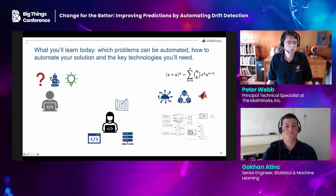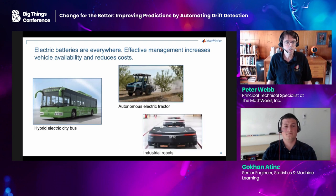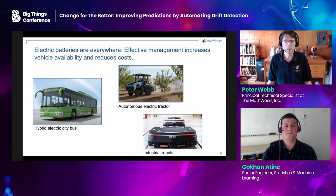Today, we're going to demonstrate how we built a predictive maintenance application for a fleet of electric vehicles. As the world moves toward carbon neutral technologies, electric batteries are showing up in very diverse places — city buses, farming machinery, and factory floor automation. Machine learning-powered predictive maintenance enables us to manage these batteries more effectively than simply replacing them according to manufacturer guidelines. We're going to focus on that bus.